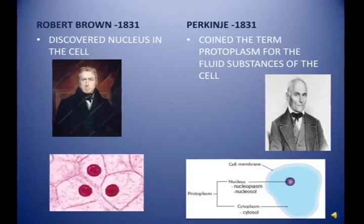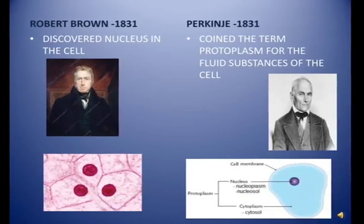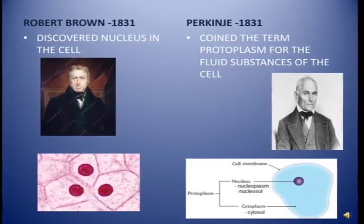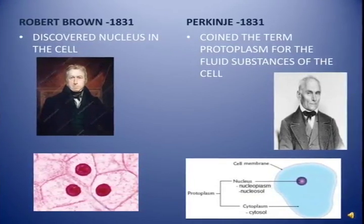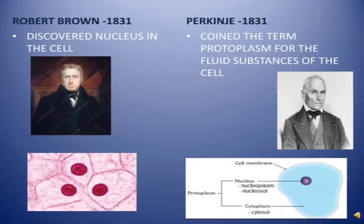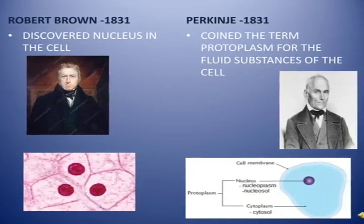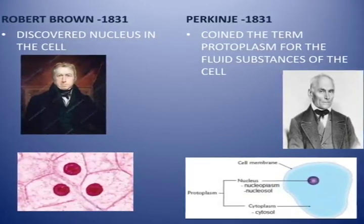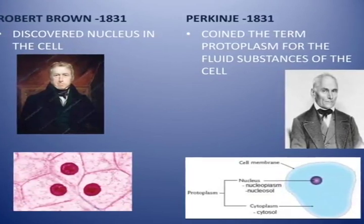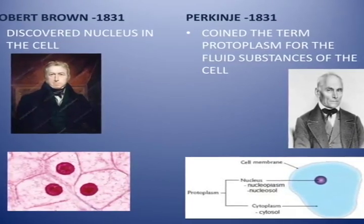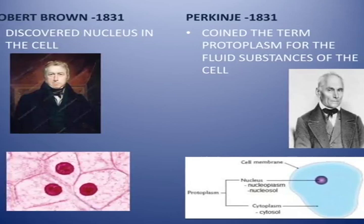Next, Robert Brown. In 1831, he discovered the nucleus of the cell — a darkly stained substance present at the center of the cell. Purkinje, also in 1831, coined the term 'protoplasm' for the fluid substance of the cell. Protoplasm is the fluid substance present inside the nucleus and in the cytoplasm.